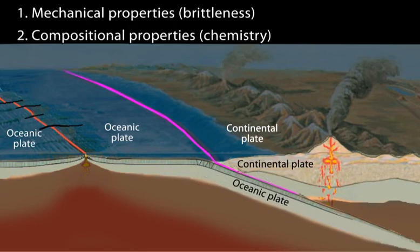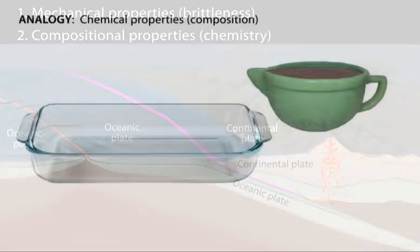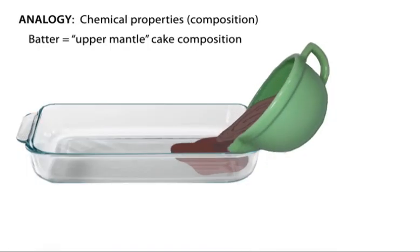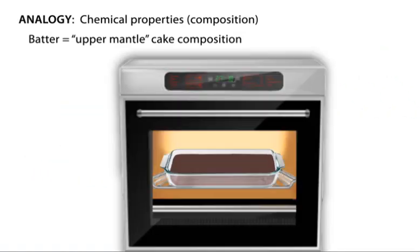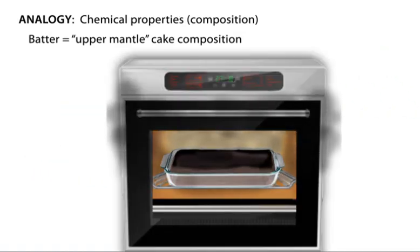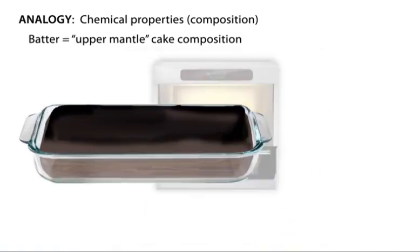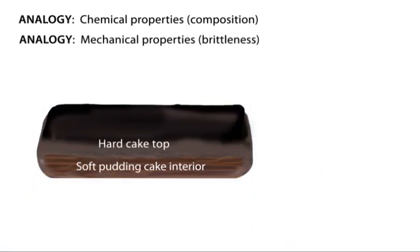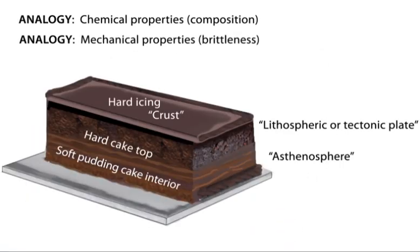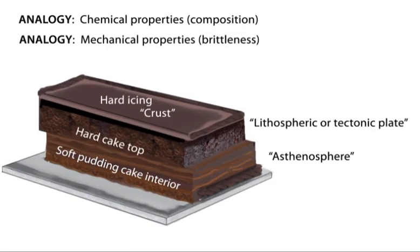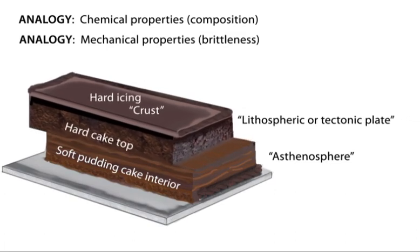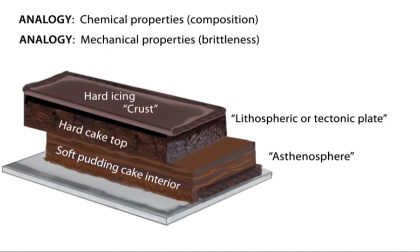Still confused? Let's try an analogy. If you put pudding cake batter in a too-hot oven, the upper part cooks too fast and hardens, while the lower pudding part stays soft, even though they're the same composition. Next, add an icing that hardens. The crust and upper cake are different compositions, but can move as a rigid unit over the soft pudding.